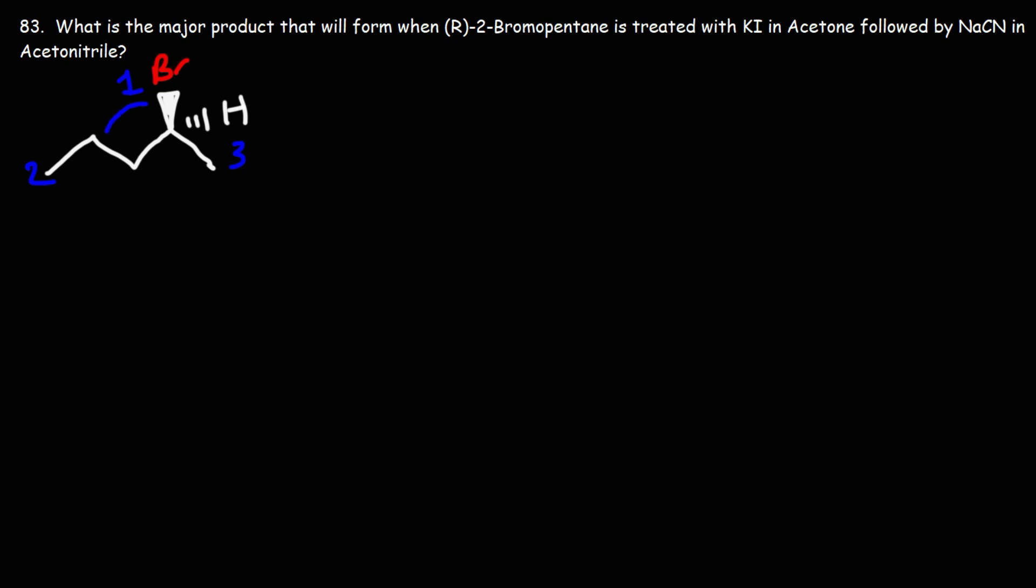One, two to three - this is going in the S direction. So what we're going to do to make it R is put hydrogen in the front and bromine in the back.